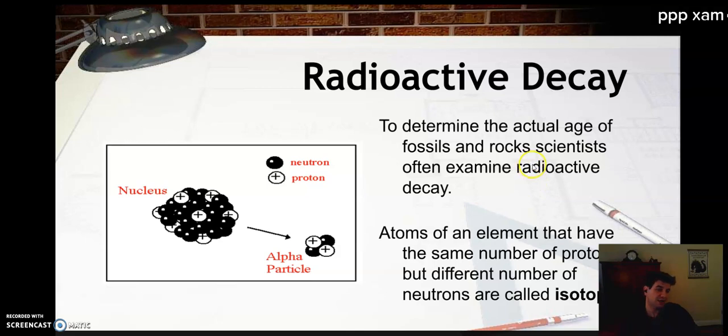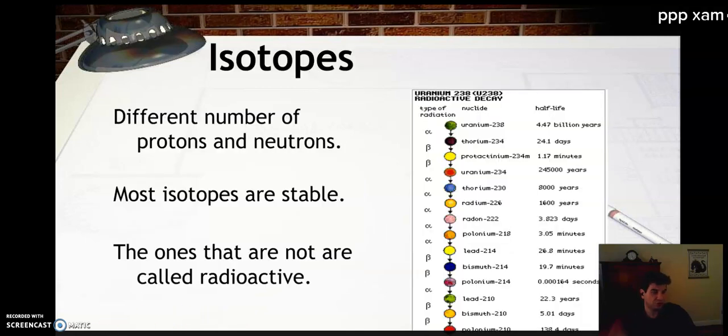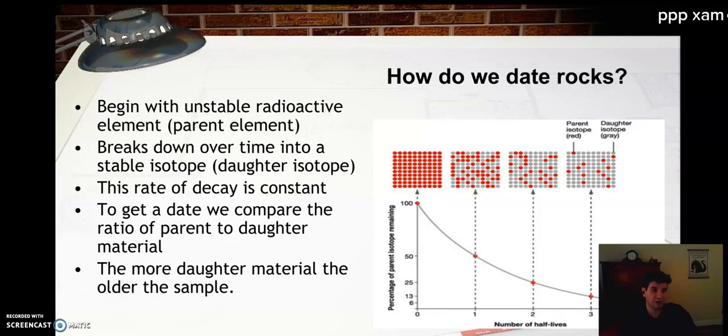So to go over the concept again, and you're going to read through this in detail. I'm just going to go through it quick for lack of time. To determine the actual age of fossils and rocks, I often examine radioactive decay. These are known as isotopes. Isotopes have different numbers of protons and neutrons. Most isotopes are stable. Some are not. The ones that are unstable are called radioactive. And we use those for dating. How does this work? Begin with an unstable element. Break it down over time. Oh, it breaks down over time into its daughter isotope. The rate of decay is constant. Can't change it. To get a date, we're going to compare the ratio of parent to daughter. The more daughter material, the older the sample. And that was today's lesson in a nutshell.